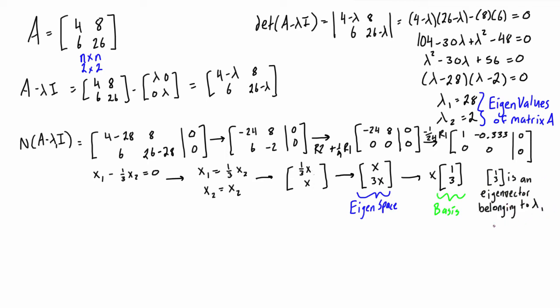Now we have to repeat this process to find the eigenspace and eigenvector belonging to lambda 2. We take the nullspace of A minus lambda 2 I. In this case, lambda 2 is the value 2. When we plug it in, just like the example above, we now have [4 minus 2, 8; 6, 26 minus 2]. We're taking a nullspace, so we set the right hand side of the augmented matrix to 0. If we simplify these numbers, we get [2, 8; 6, 24].